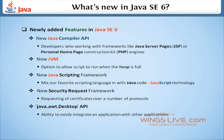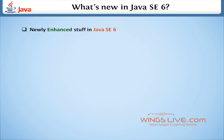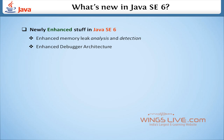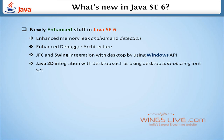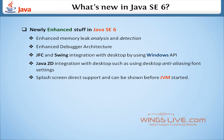Next, let's discuss the newly enhanced features in Java SE 6. The first is enhanced memory leak analysis and detection. Next is enhanced debugger architecture. There is JFC and Swing integration with the desktop using Windows API, and Java 2D integration with the desktop such as using desktop anti-aliasing font settings. Also, splash screen direct support, which can be shown before the JVM has started.